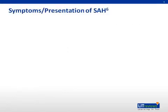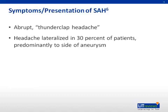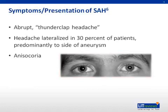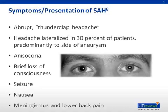Symptoms and presentation associated with subarachnoid hemorrhage. Abrupt thunderclap headache is present in up to 97% of cases and is classically described as the worst headache of my life. However, up to 12% of subarachnoid hemorrhages are misdiagnosed upon presentation due to mild symptoms. Patients may have sentinel bleeds or small leaks leading to mild symptoms. The likelihood that this occult aneurysm will rebleed is great. Headache is lateralized in 30% of patients, predominantly to the side of the aneurysm. Anisocoria, or pupillary asymmetry, may precede bleeding if secondary to PCOM compression of the oculomotor nerve. Brief loss of consciousness, seizure, and nausea or vomiting can also be seen. Meningismus and lower back pain are common, but are usually delayed several hours after the bleed since it is caused by the breakdown of blood products within the CSF, which can lead to an aseptic meningitis.